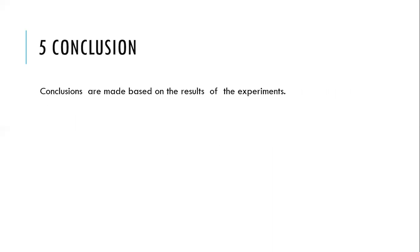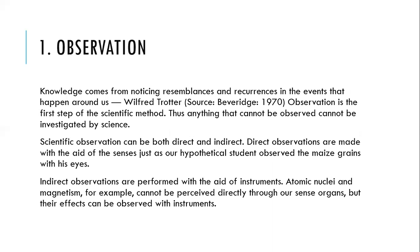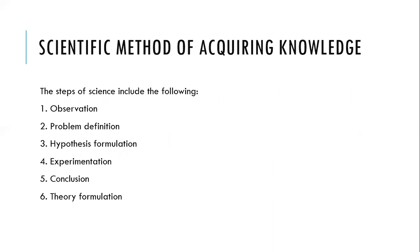That is the end of Unit 2. Don't forget the steps of science: we start from observation, from there we define the problem, from there we formulate our hypothesis, then we go to the lab for experimentation, then we write our conclusions, then we formulate the theory. I will be presenting Unit 3 in the next video. If you have not subscribed to the channel, kindly subscribe now. Thank you.